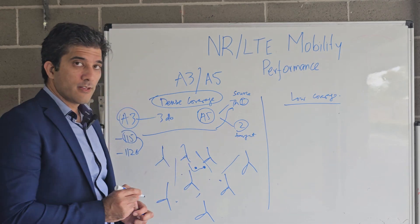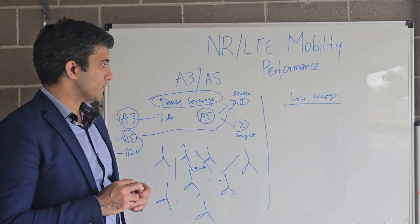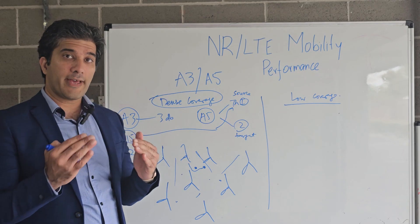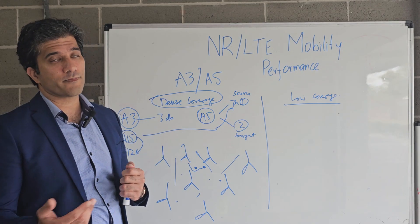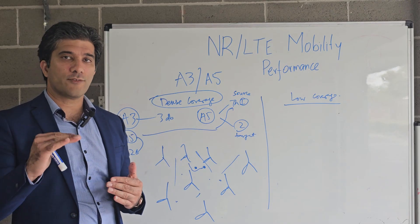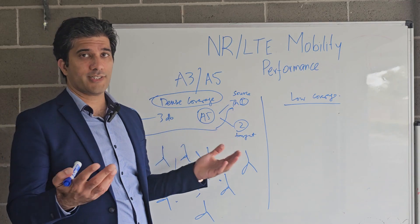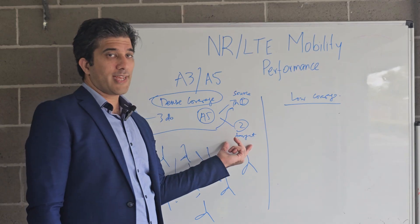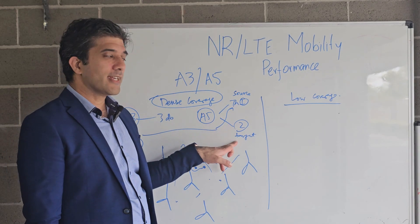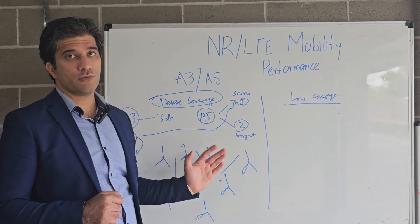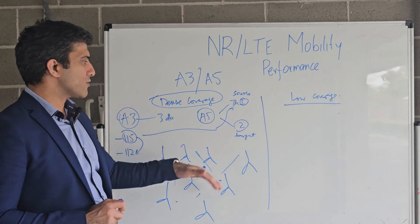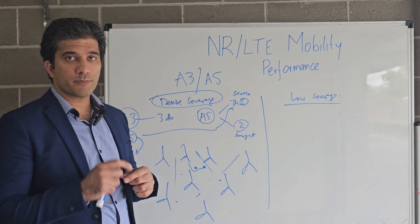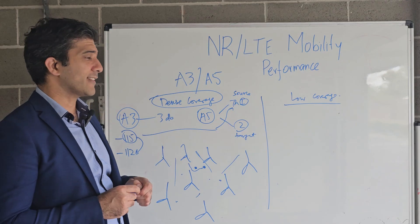If you hand over very late, your interference might be quite high. One strategy if you want to use A5 in denser areas is to keep threshold one a bit higher so that you start searching earlier. You can set it to always-on — for example -50 or -60 dBm — but then you also have to set the target threshold accordingly. Even then, you might end up dragging the call. So in a dense environment it's probably better to go with A3, where you keep handing over to the better cell to a certain degree so that interference is managed — that's a very important thing.